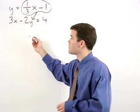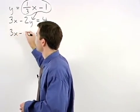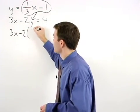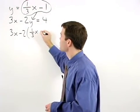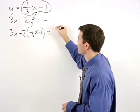which becomes 3x minus 2 times parentheses 1 third x minus 1 equals 4.